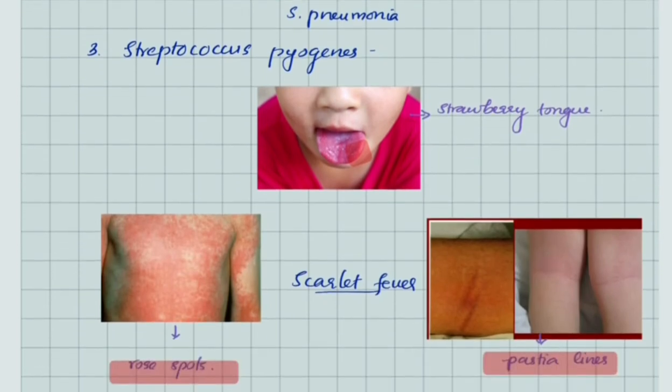Streptococcus pyogenes causes scarlet fever, which has three important characteristic features: strawberry tongue, rose spots on body, and Pastia lines on flexures.